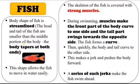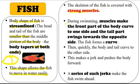The body shape of fish is streamlined — it tapers at both ends, so the head and tail are smaller than the middle portion. This streamlined shape allows the fish to move through water easily. The skeleton of the fish is covered with strong muscles. During swimming, the muscles make the front part of the body curve to one side while the tail part swings towards the opposite side.